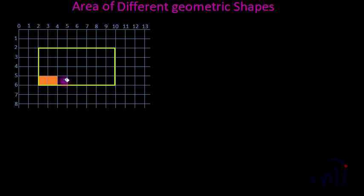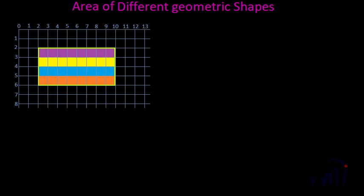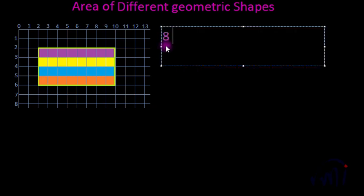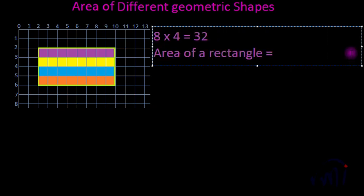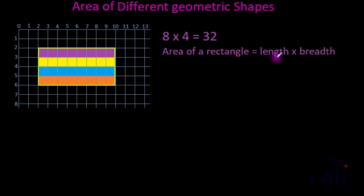We have total 1, 2, 3, 4, 5, 6, 7 and 8 squares along the length, and we have total 1, 2, 3 and 4 such rows. So we get 8 multiplied by 4 = 32 squares. Therefore, the area of a rectangle equals length multiplied by breadth, because length gives the number of unit squares along the length and breadth gives the number of rows.